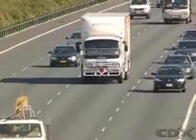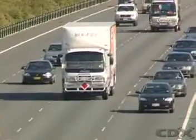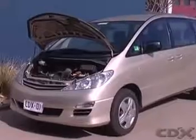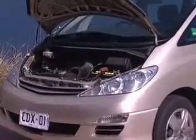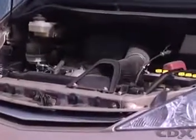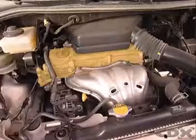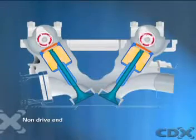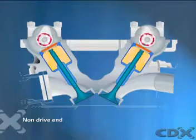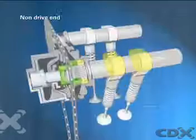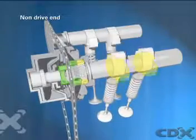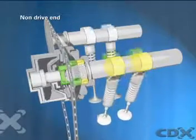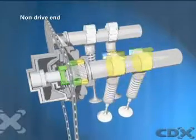Single overhead camshaft engines can use cam phasing. However, double overhead camshaft engines can receive greater benefit from phasing change VVT, as the intake and exhaust camshaft can be controlled separately. Some manufacturers choose to alter phasing on both intake and exhaust camshafts, but it's also common that only the inlet camshaft is phase controlled, with the exhaust camshaft fixed.